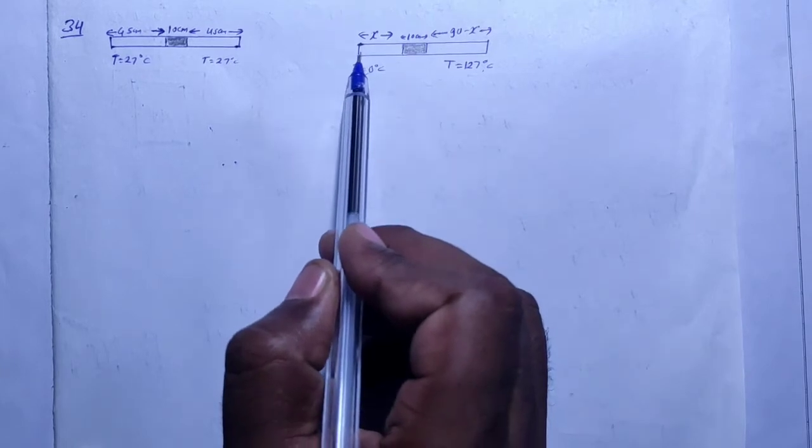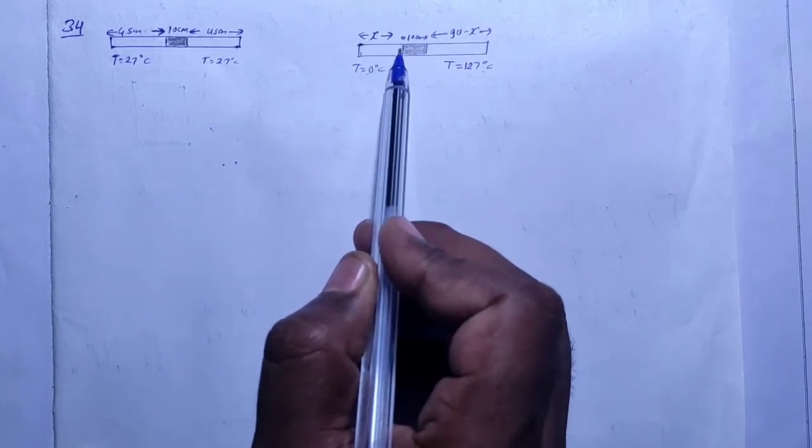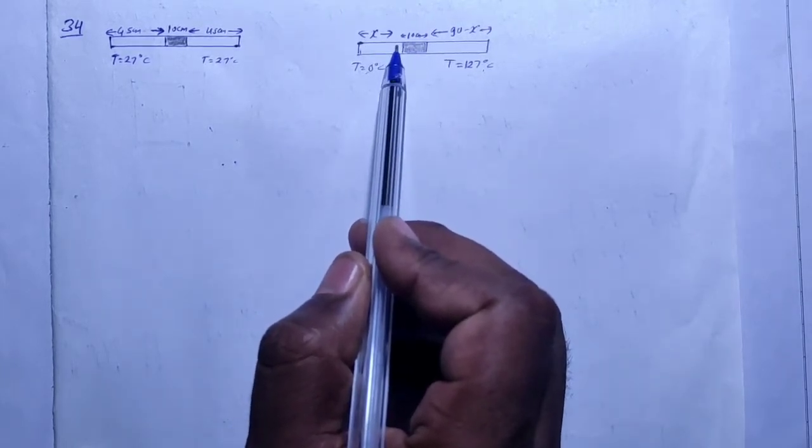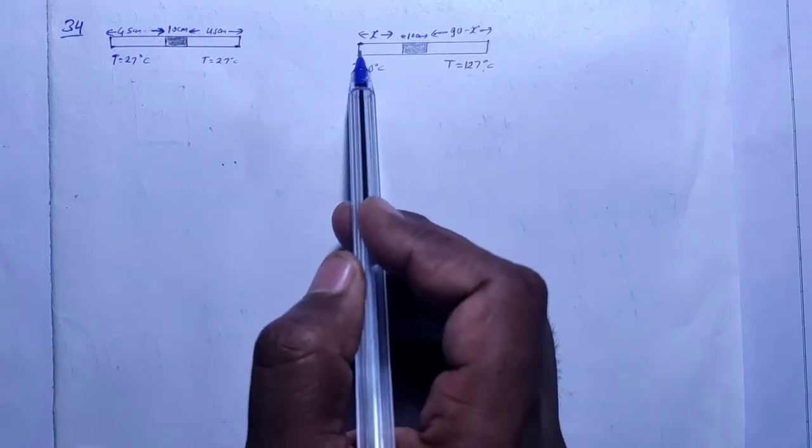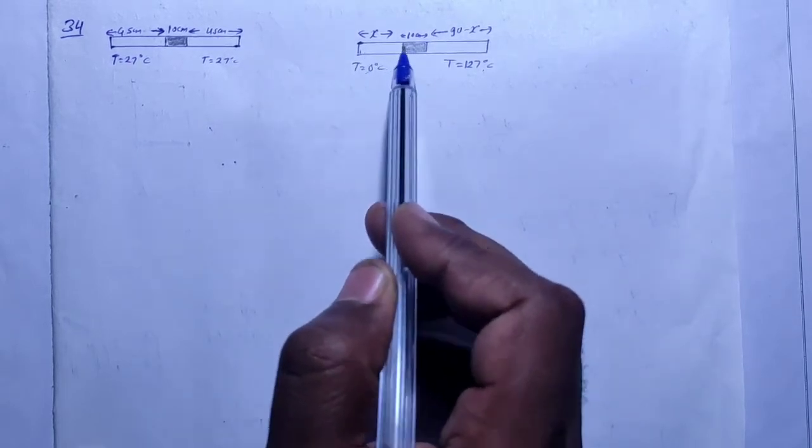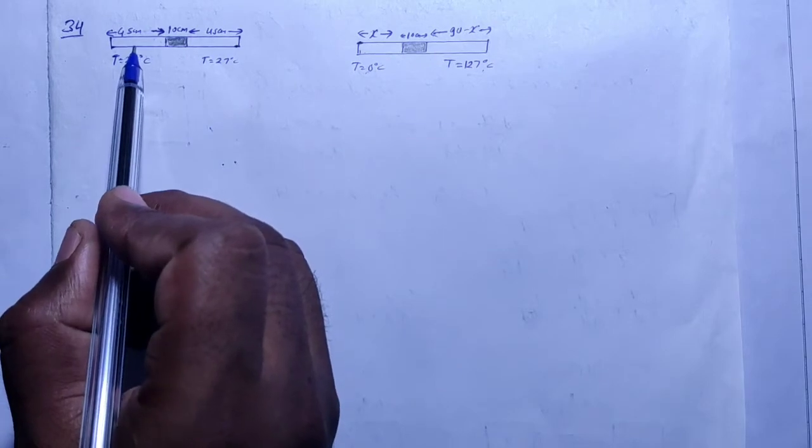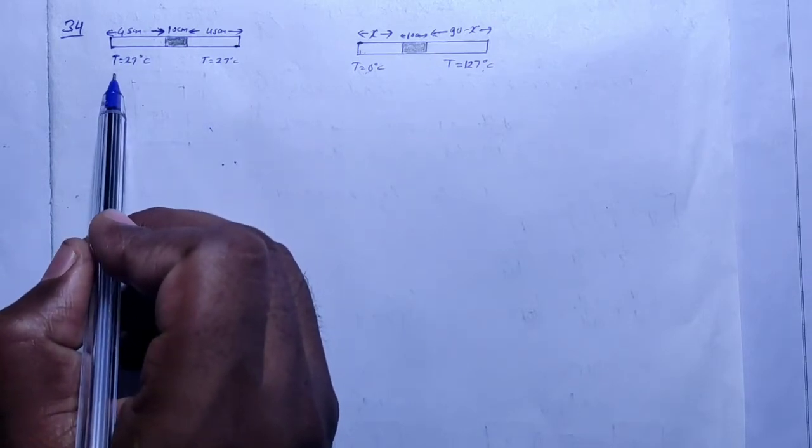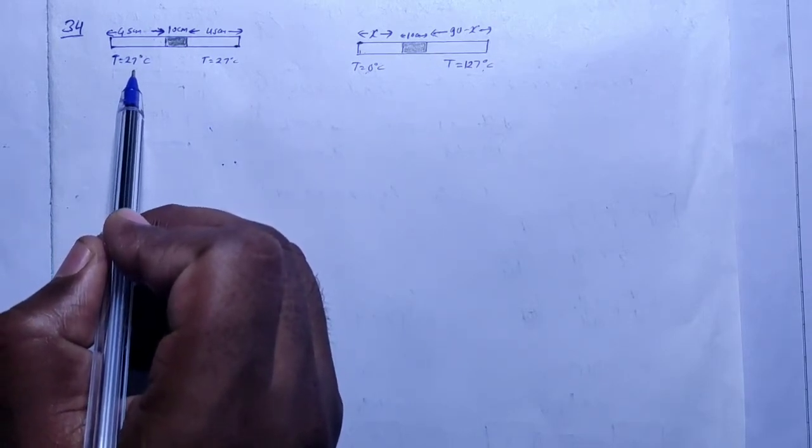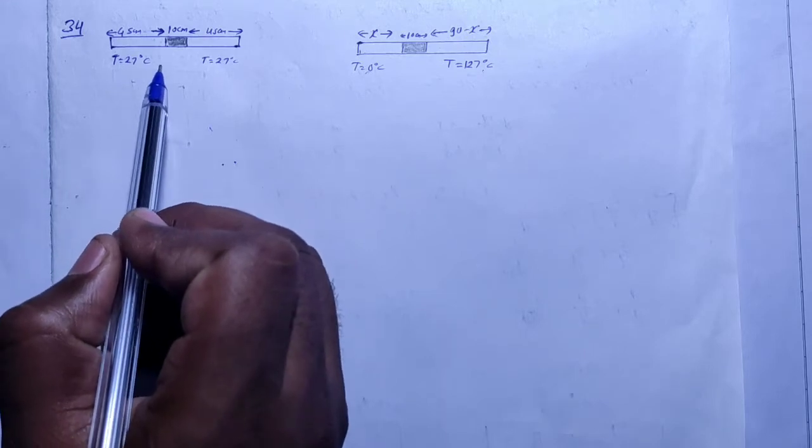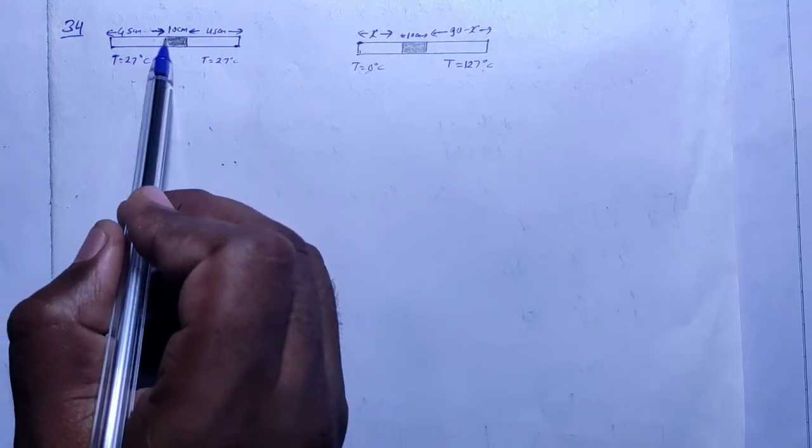Now what happens? One side is at 0 degrees Celsius and the other is at 127. So on the cooler side, the length will be different. We need to find the length of the gas column, how much it will be. We need to find the air column length.